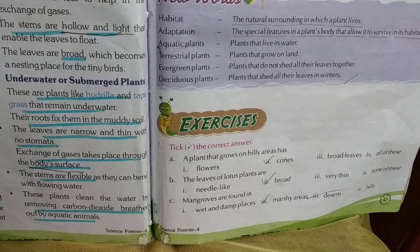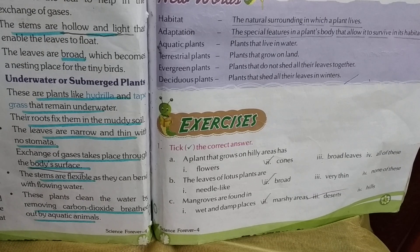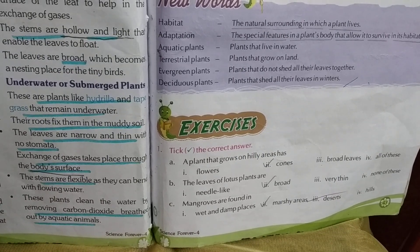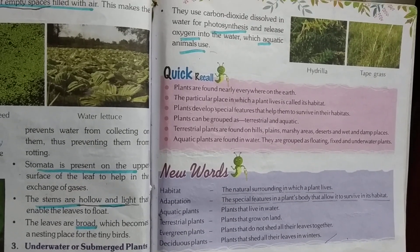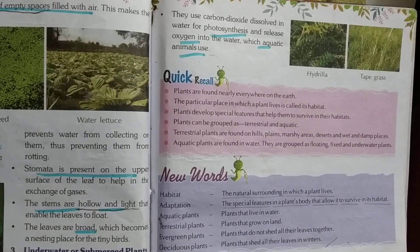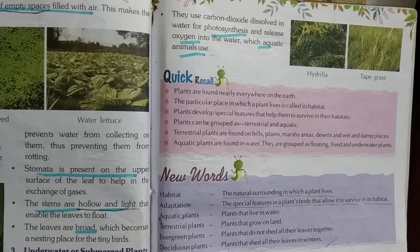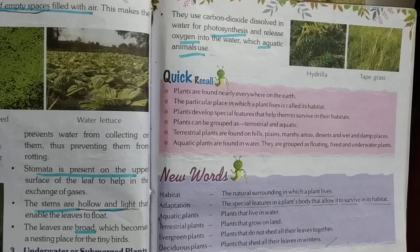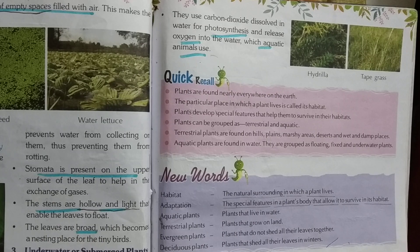Exchange of gases takes place throughout the body surface. The stems are flexible. These plants clean the water by removing carbon dioxide breathed out by aquatic animals. They use carbon dioxide dissolved in water for photosynthesis and release oxygen into the water, which aquatic animals use. There are 3 types of aquatic plants: floating, fixed, and underwater submerged plants.